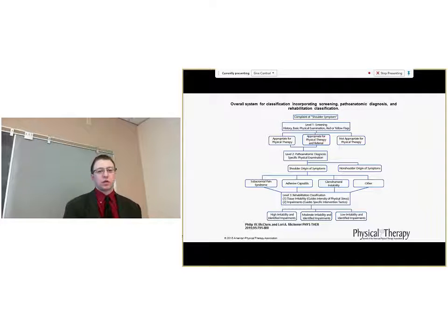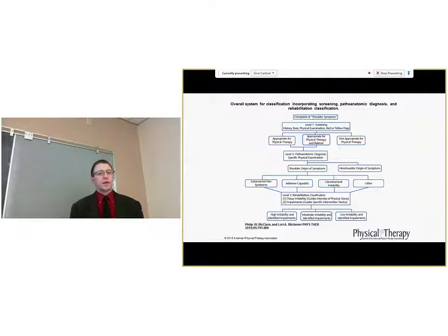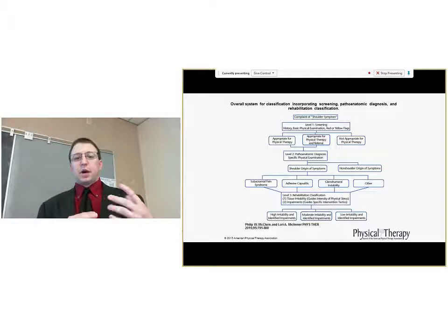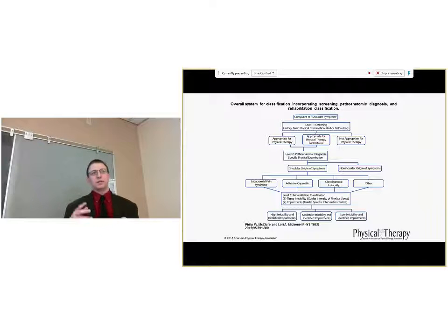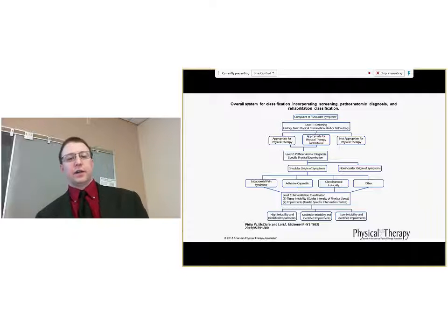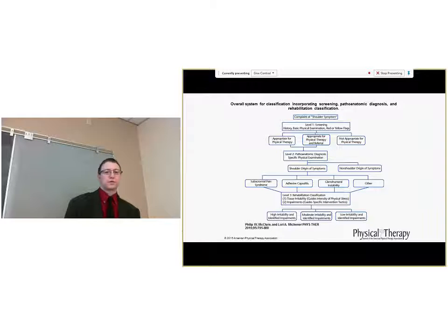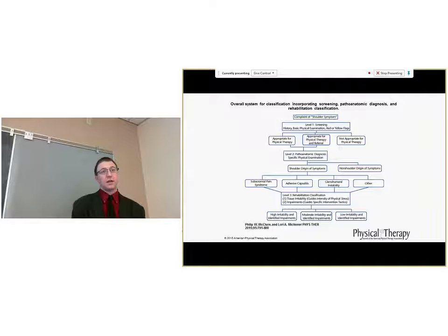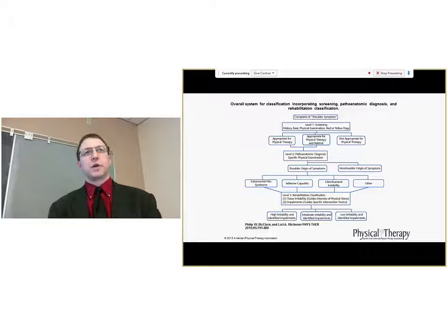After appropriate screening, the pathoanatomic diagnosis classifies patients in the stage classification system. The diagnosis is derived from a combination of history, specific special tests, and imaging results if available. Prognosis is still seemingly derived from pathoanatomy, as available from systematic reviews and practice guidelines. Rehabilitation classification is then utilized to focus and guide the intensity and specific intervention selection based on the level of irritability and specific impairments.